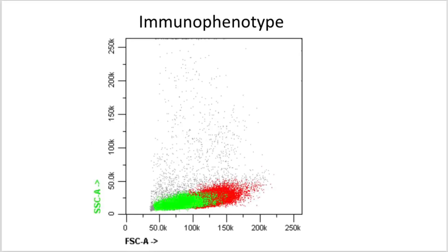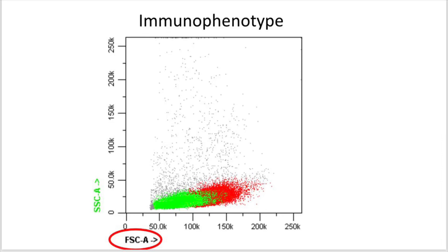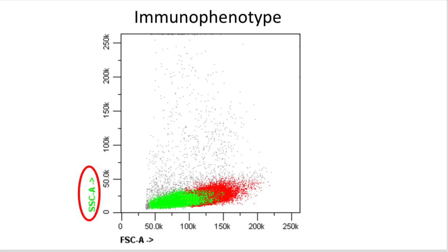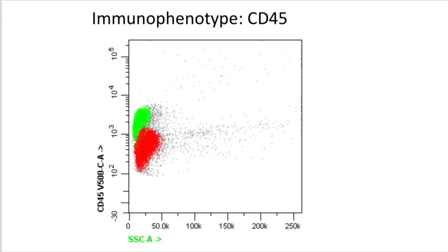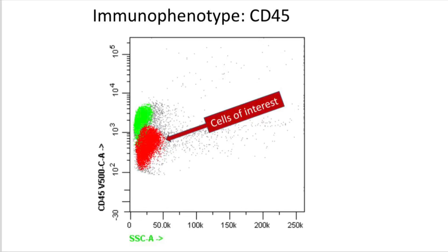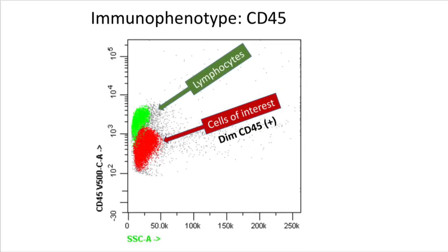Looking at the immunophenotype, these are the two physical parameters: forward light scatter, which corresponds generally to cell size, and side scatter, also known as orthogonal light scatter, which corresponds generally to cytoplasmic complexity. We have two cell populations colored. The population of interest — the red cells — are medium-sized and do not have much cytoplasmic complexity. On the next plot, CD45 is plotted against side scatter, and our population of interest is CD45 positive, though dimly positive relative to the mature T cells.